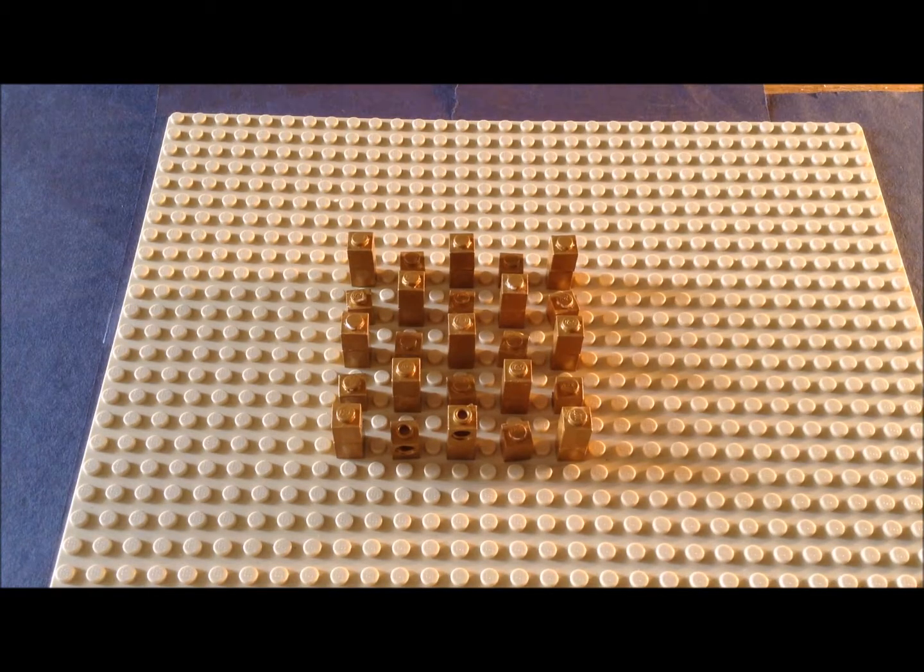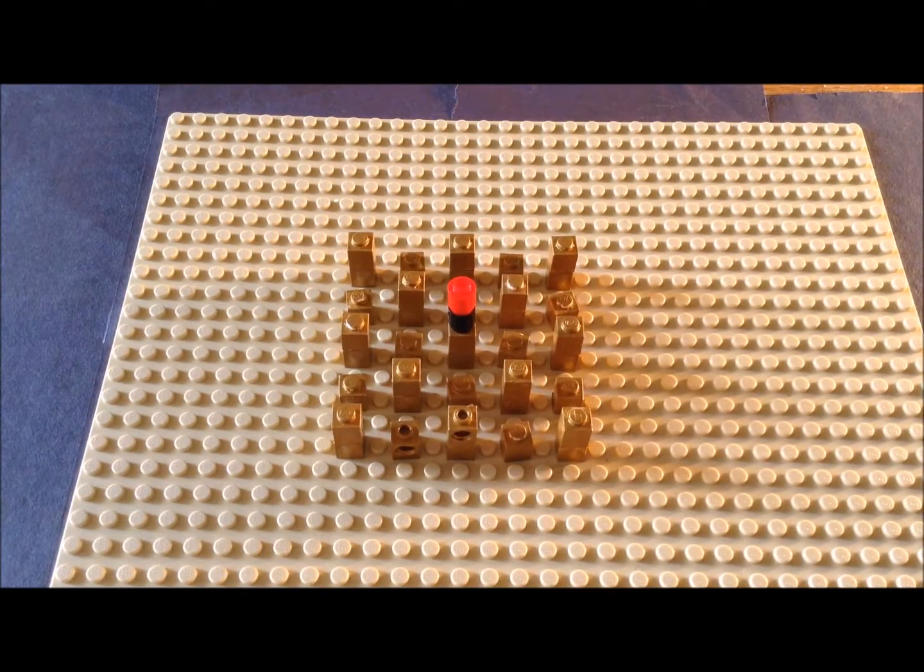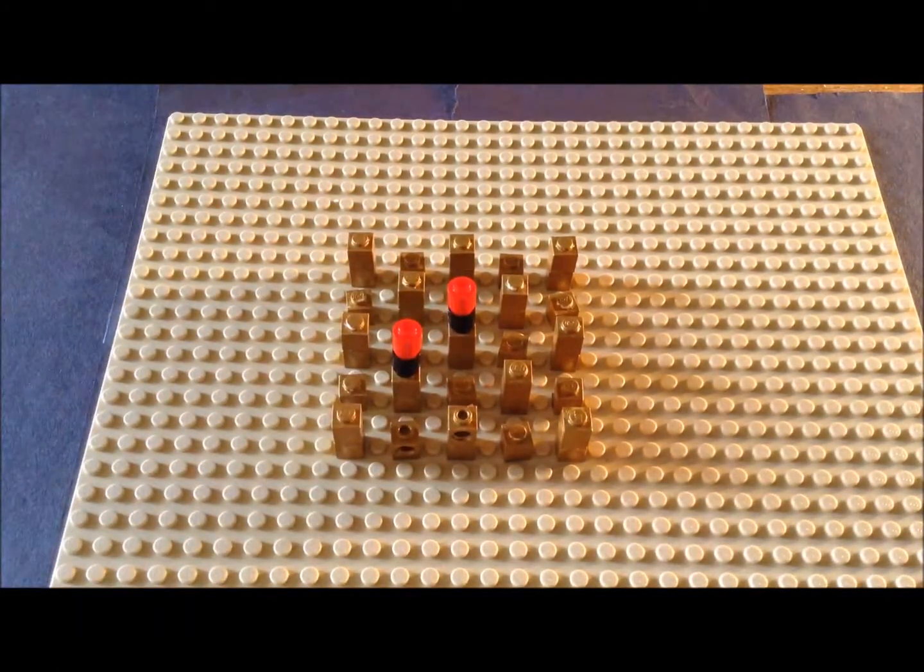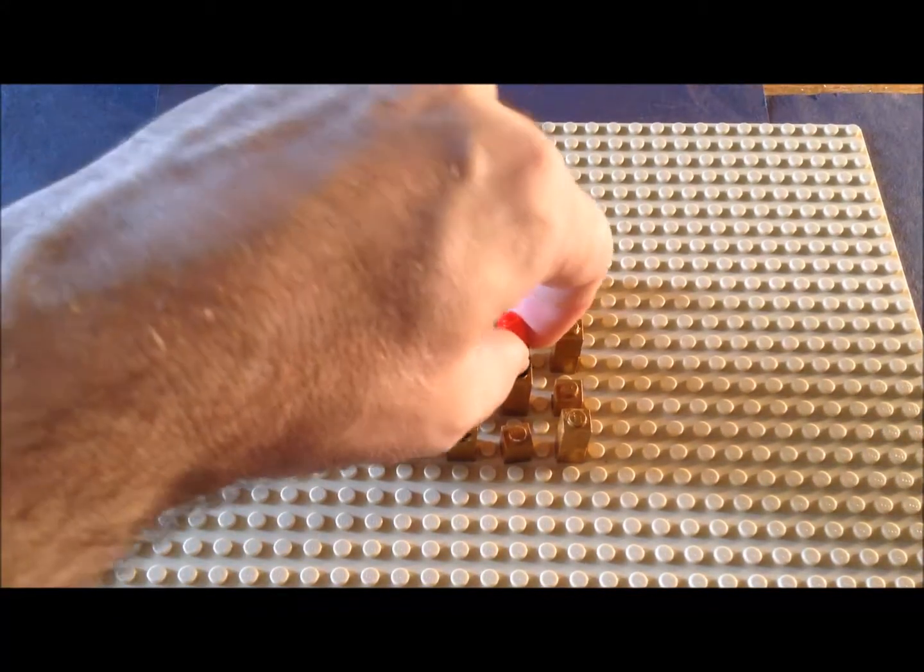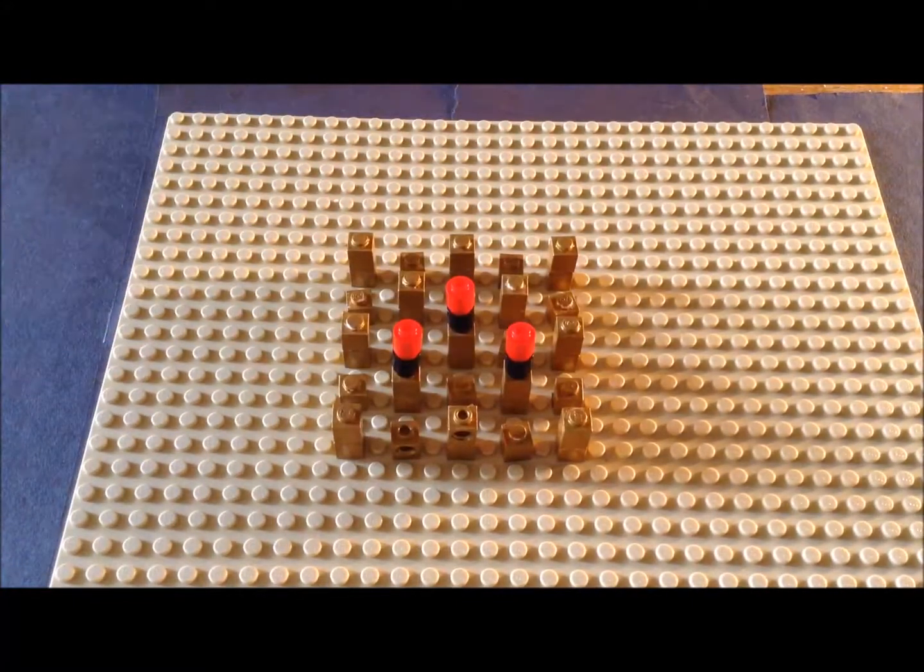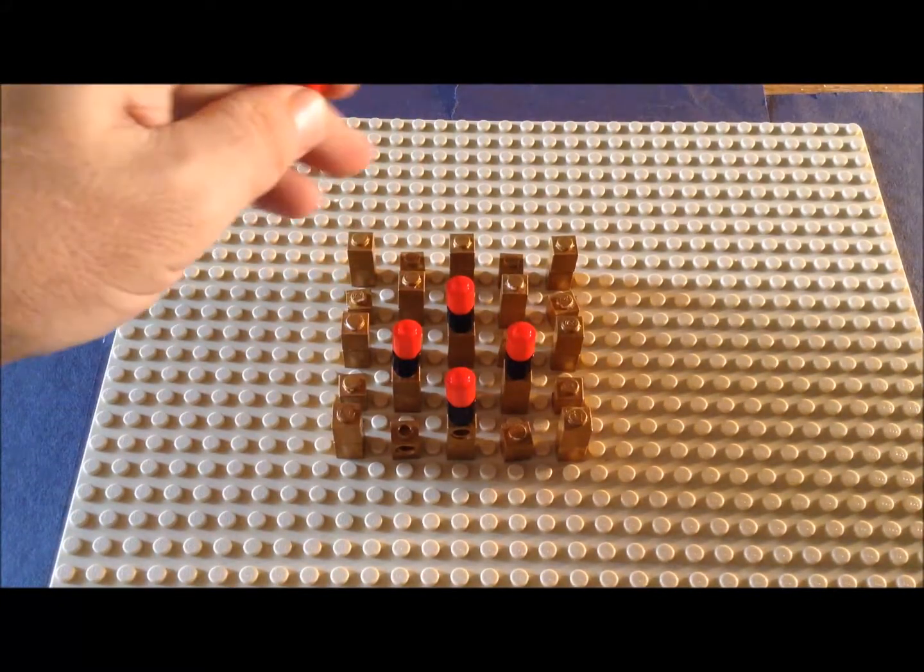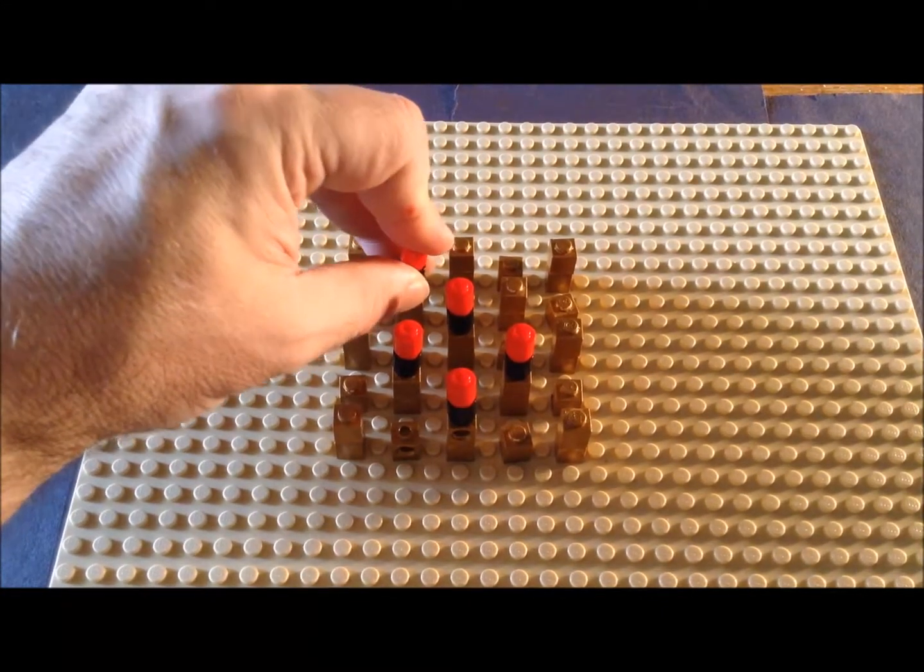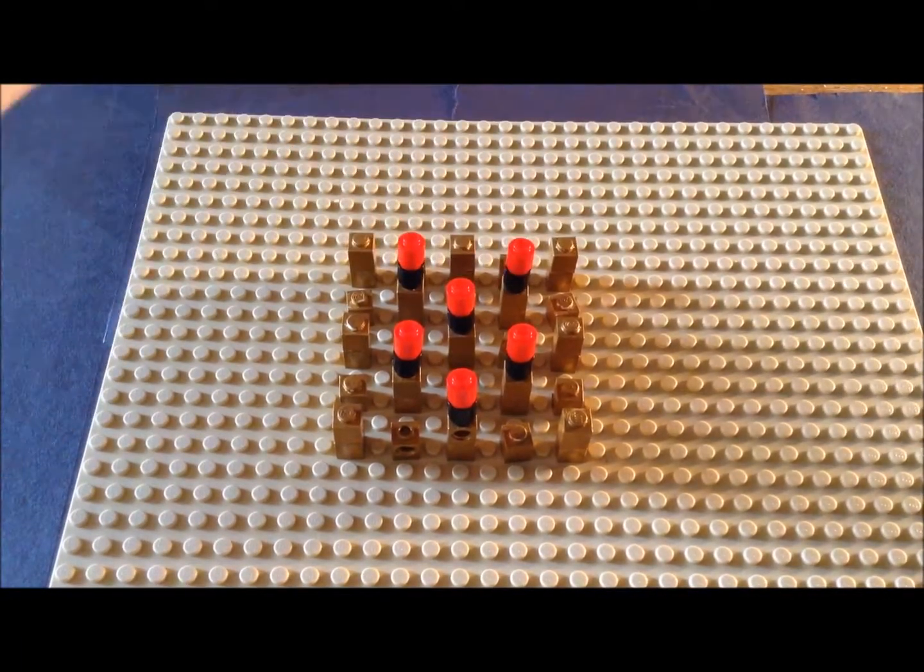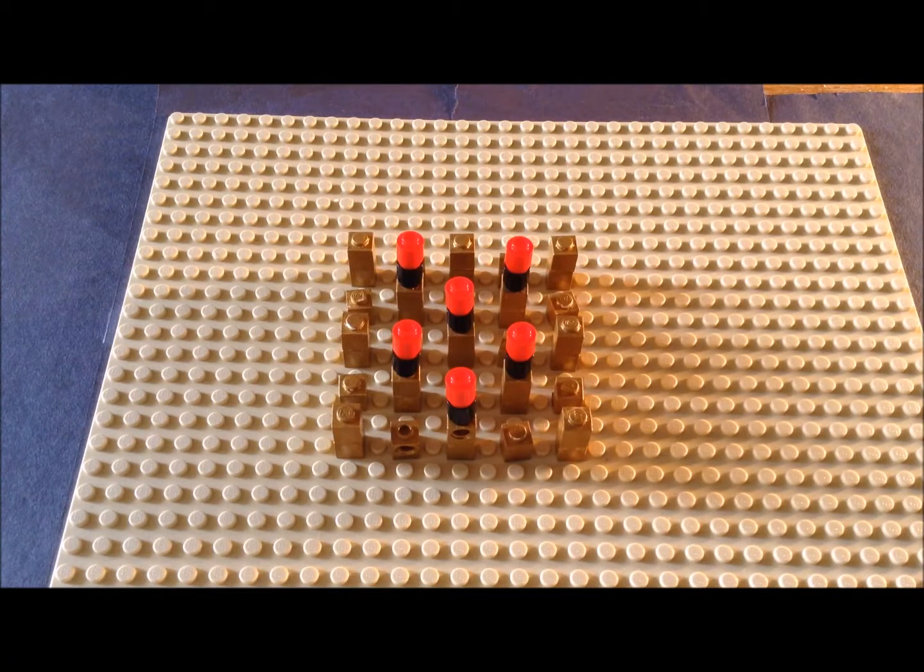To make the surface structure easier to see, let's adsorb some carbon monoxide molecules and let's put them at the on-top site. So now we have the carbon monoxide molecules adsorbed at the on-top positions and not at the fourfold hollows.